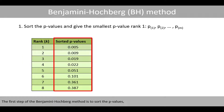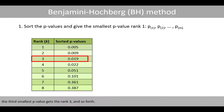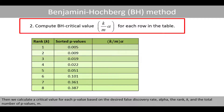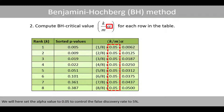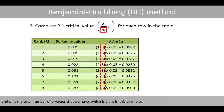The first step in the Benjamini-Hochberg method is to sort the p-values, where the smallest p-value gets rank 1, the next smallest gets rank 2, the third smallest gets rank 3, and so forth. Then we calculate a critical value for each p-value based on the desired false discovery rate alpha, the rank k, and the total number of p-values m. We'll set alpha to 0.05 to control the false discovery rate to 5%. k is the rank, and m is the total number of p-values, which is 8 in this example.